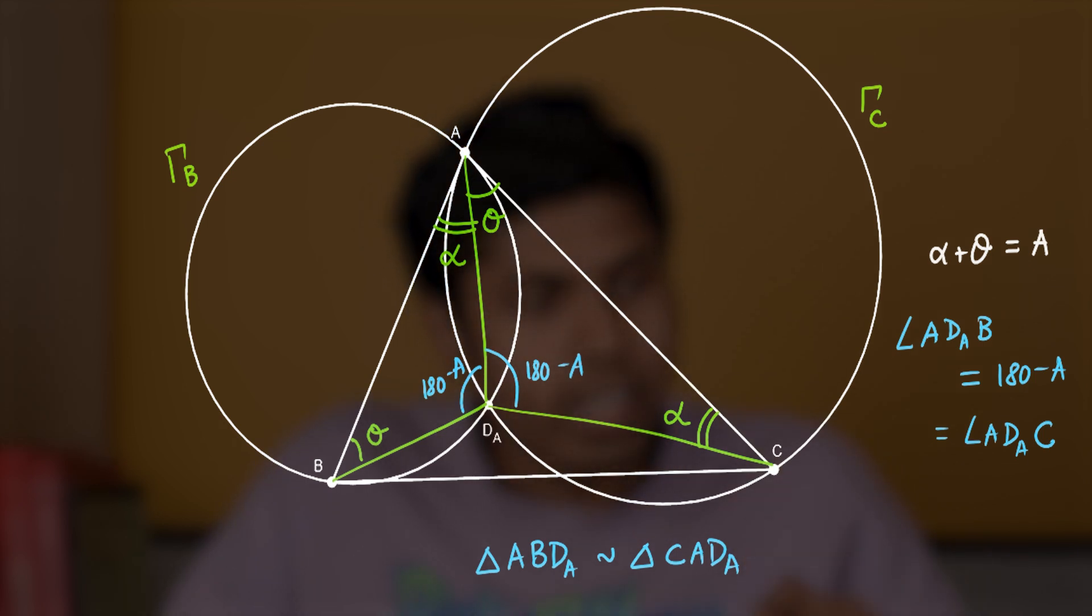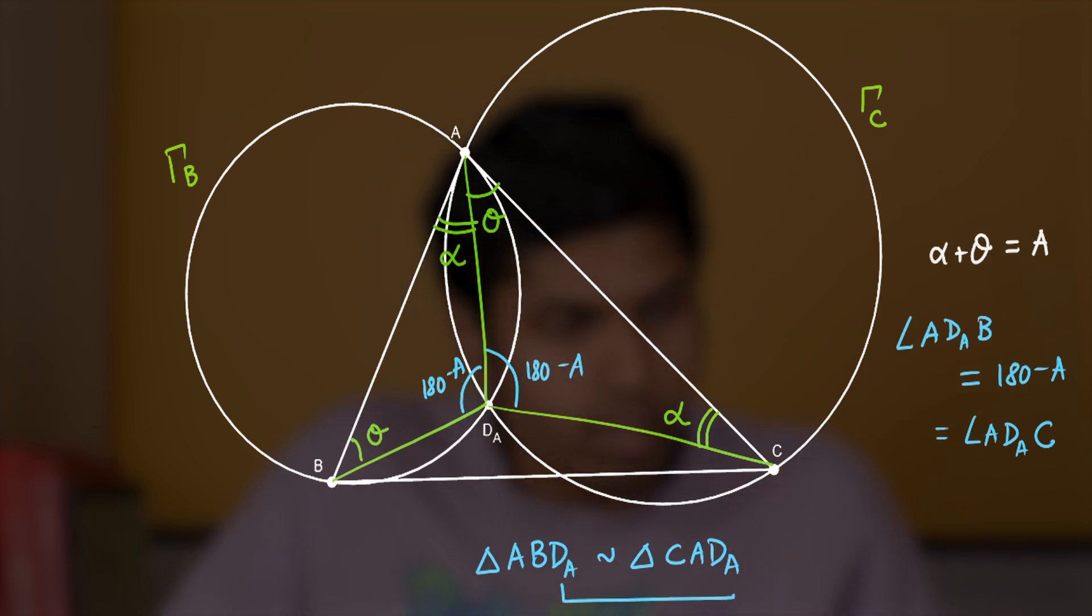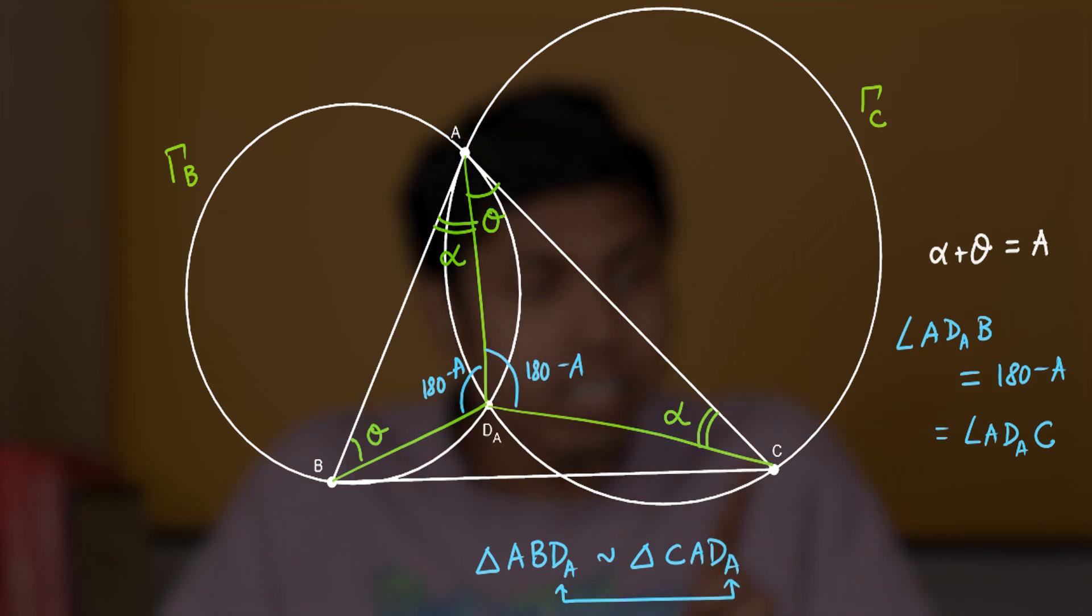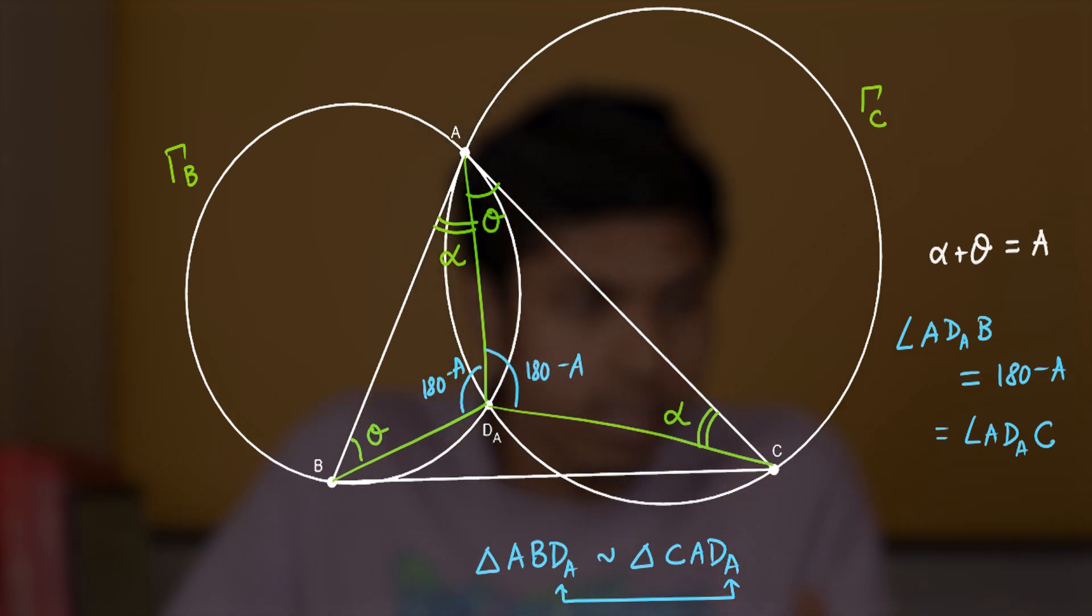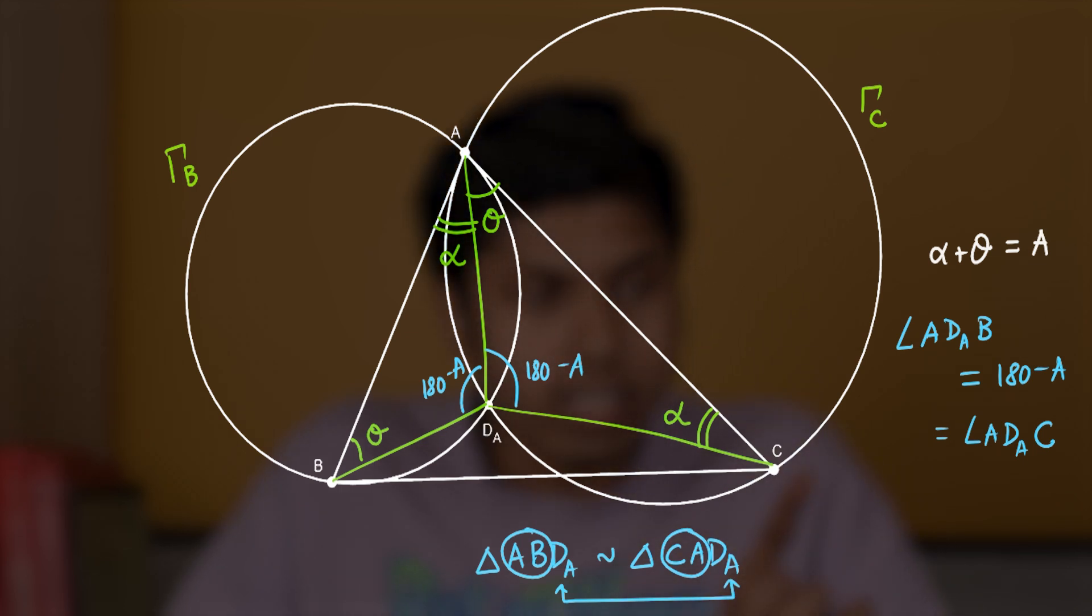Now you can observe that the two triangles ABD_A and CAD_A are similar because of theta, alpha, 180 minus A angles. So this also gives us a common point D_A with which they are similar, therefore we can think of D_A as the center of spiral similarity that takes the line CA to AB.